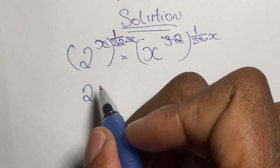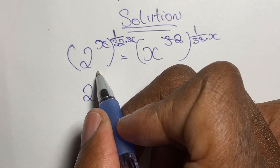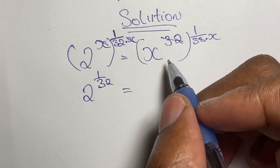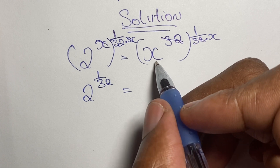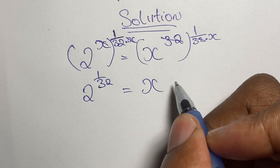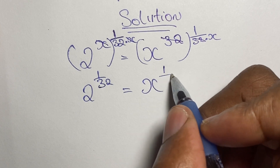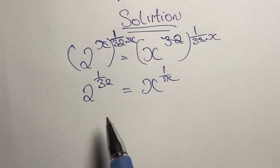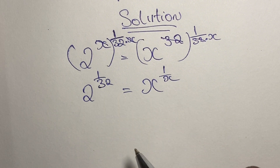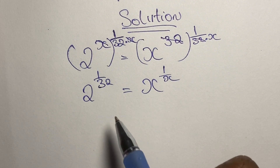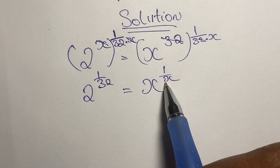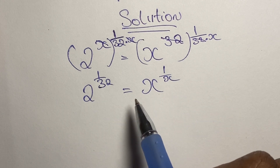This gives us 2 to the power of 1 over 32 is equal to x to the power of 1 over x, bringing x to one side of the equation. Looking at both expressions, we have x as the base with power 1 over x on the right. We need to make the left-hand side look just like the right, where the base equals the denominator of the exponent.